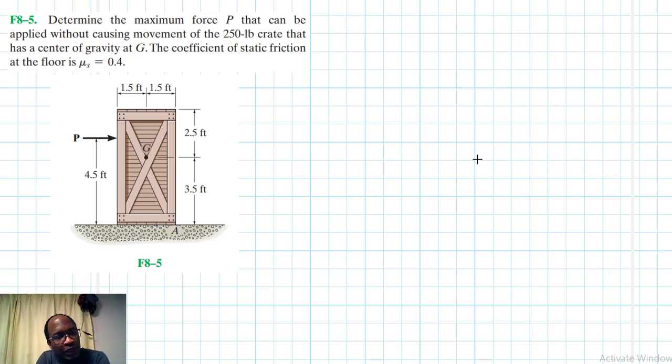Hello, I welcome you all to this another interesting screencast. The problem reads: determine the maximum force P that can be applied without causing movement of a 250 pounds crate that has the center of gravity at G.